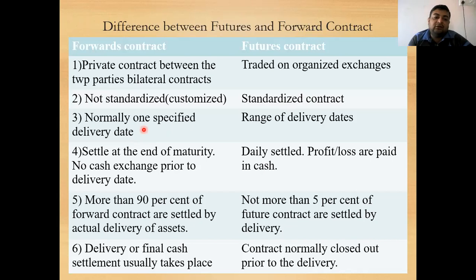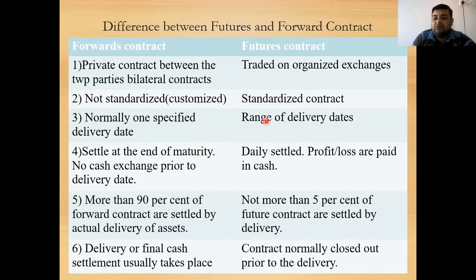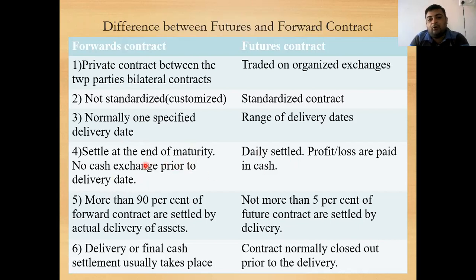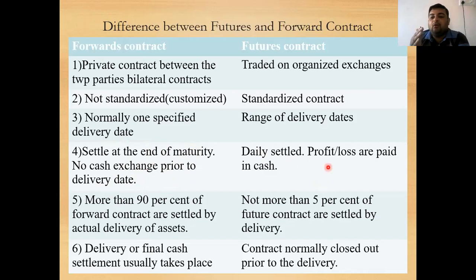In the case of forward contracts, normally there is one specified delivery date on which delivery must be made. In futures contracts, there is a range of delivery dates within which the commodity can be delivered. Forward contracts are settled at the end of maturity — no cash exchange occurs prior to the delivery date. Futures contracts require daily settlement of profit and loss paid in cash, with margin requirements. In a forward contract, if there is a loss it is settled on the forward date when the contract matures; in futures, the contract is closed and reopened daily.